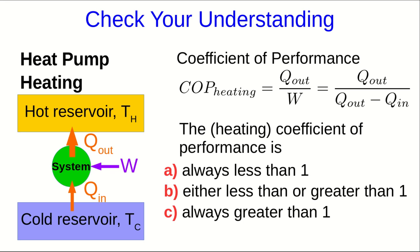So hopefully you recognized either from the equation Q_out over Q_out minus Q_in, or from thinking about how the work and Q_in have to add up to Q_out, that the work has to be less than Q_out. That tells you the denominator in the coefficient of performance must be less than the numerator, so the coefficient of performance for heating is always greater than one.